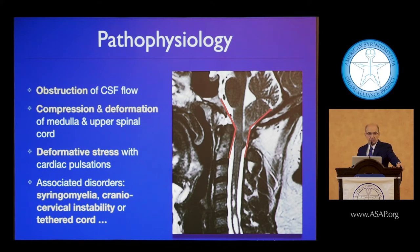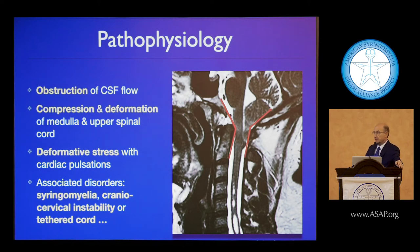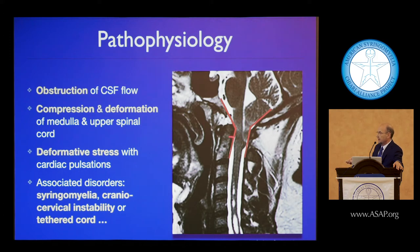What is the pathophysiology? If we're going to recommend treatment, we have to understand what it is we're trying to treat. The three key components of Chiari pathophysiology are obstruction of CSF flow, compression and deformation of the medulla and the upper cord. We want to treat the deformative stress that occurs with each heartbeat — 100,000 times a day.